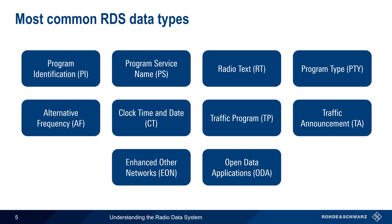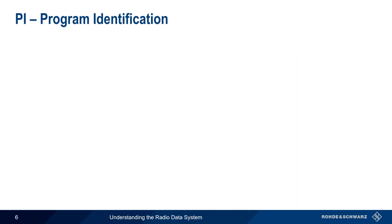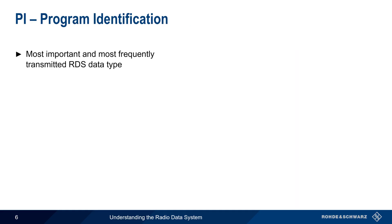In the following slides, we'll provide a brief description of each and explain how each element is normally used. The most important and most frequently transmitted RDS data type is PI, or Program Identifier.